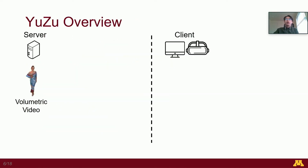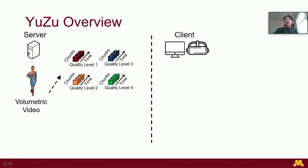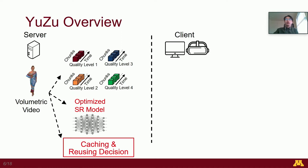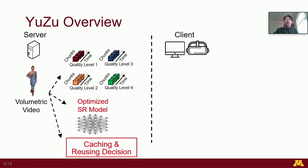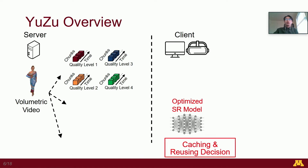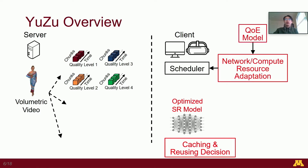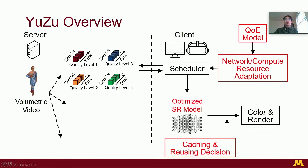Let's take an overview of Yuzu. Yuzu streams video-on-demand volumetric content stored on an internet server to a client host. On the server side, the volumetric video is divided into chunks, and each chunk is encoded into multiple versions with different qualities. The Yuzu server also offline trains and optimizes an SR model for each volumetric video and pre-computes the caching and reusing decisions. During online streaming, the Yuzu server first sends the pre-trained model as well as the caching and reusing decisions to the Yuzu client. The scheduler then fetches volumetric content based on the network-compute resource adaptation component, guided by our QoE model. The fetched content is then upsampled considering caching and reusing decisions, colored, and rendered to the viewer.